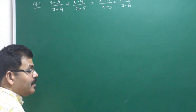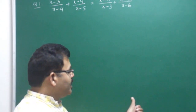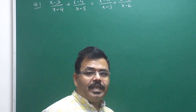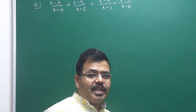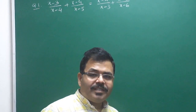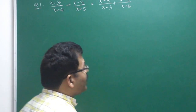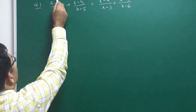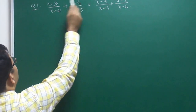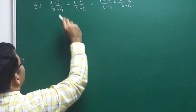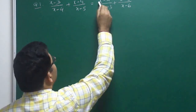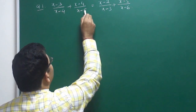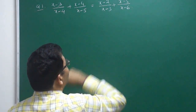Here we have a trick with which this equation can be solved in 2 to 5 seconds. Observe: the sum of the numerators on the left side is 2x-7. The same denominator sum is 2x-7. The sum on this side is 2x-9 and the same here is 2x-9.